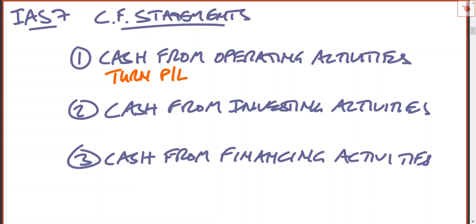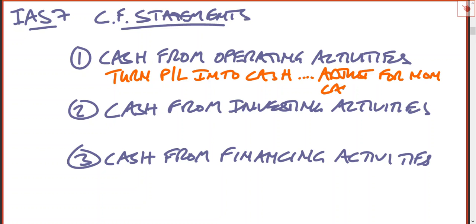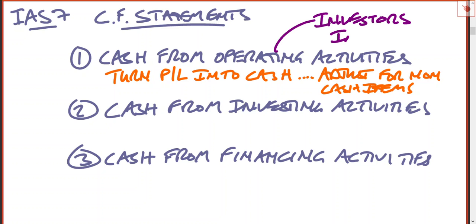Cash from operating activities turns the P&L into cash. What you do is adjust for non-cash items. At the top of a cash flow statement you take the profit before tax, add back any non-cash expenses, and take off any non-cash gains. That broadly turns the P&L into cash, with a working capital adjustment after that. This tells you the cash from operating activities, which investors will be interested in — they want to see how much cash you are generating.